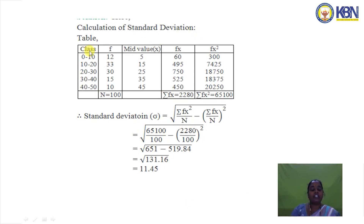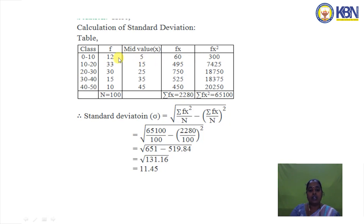To calculate the standard deviation for a continuous series with class intervals 0–10 to 40–50, we convert class intervals to mid values using (lower + upper) / 2. Then we compute fx (frequency × mid value) and fx² for each class. The standard deviation formula used is σ = √[(Σfx²/N) − (Σfx/N)²]. Substituting the values, we get σ = 11.45.